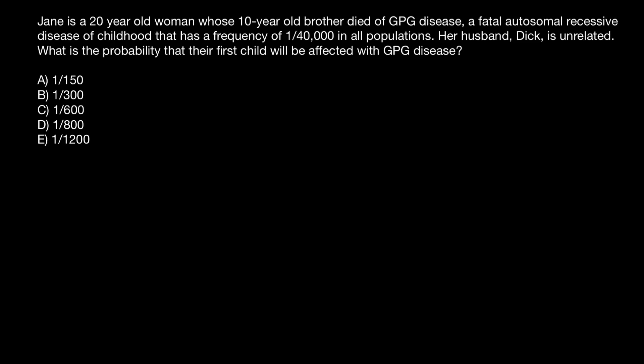Jane is a 20-year-old woman whose 10-year-old brother died of GPG disease, a fatal autosomal recessive disease of childhood that has a frequency of one in 40,000 in all populations. Her husband Dick is unrelated. What is the probability that their first child will be affected with GPG disease?